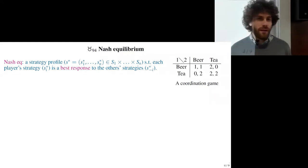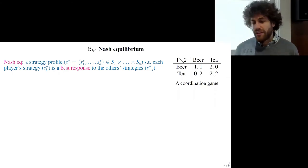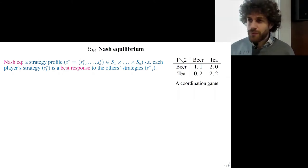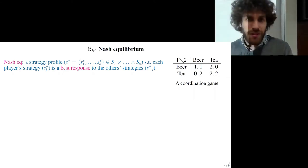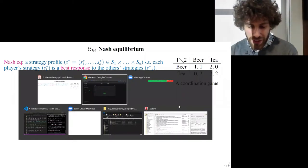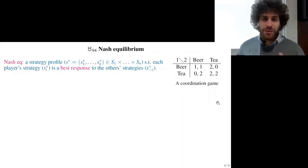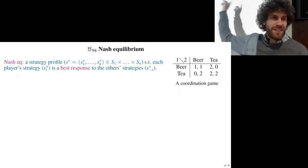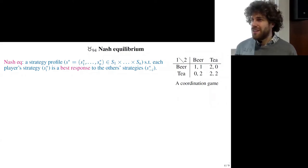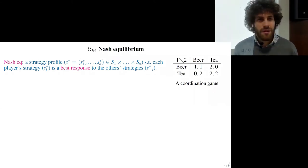If both choose beer, you're also happy to have made the same choice, but it's less healthy, so each one gets only one. And if one gets beer and the other gets tea, the one with beer can show off and is the cool one — they obtain two and the other only zero. So in this game, what do you play? You can choose on your phone; you shouldn't be influenced by your true preferences for beer or tea. Just imagine your payoffs are like that.